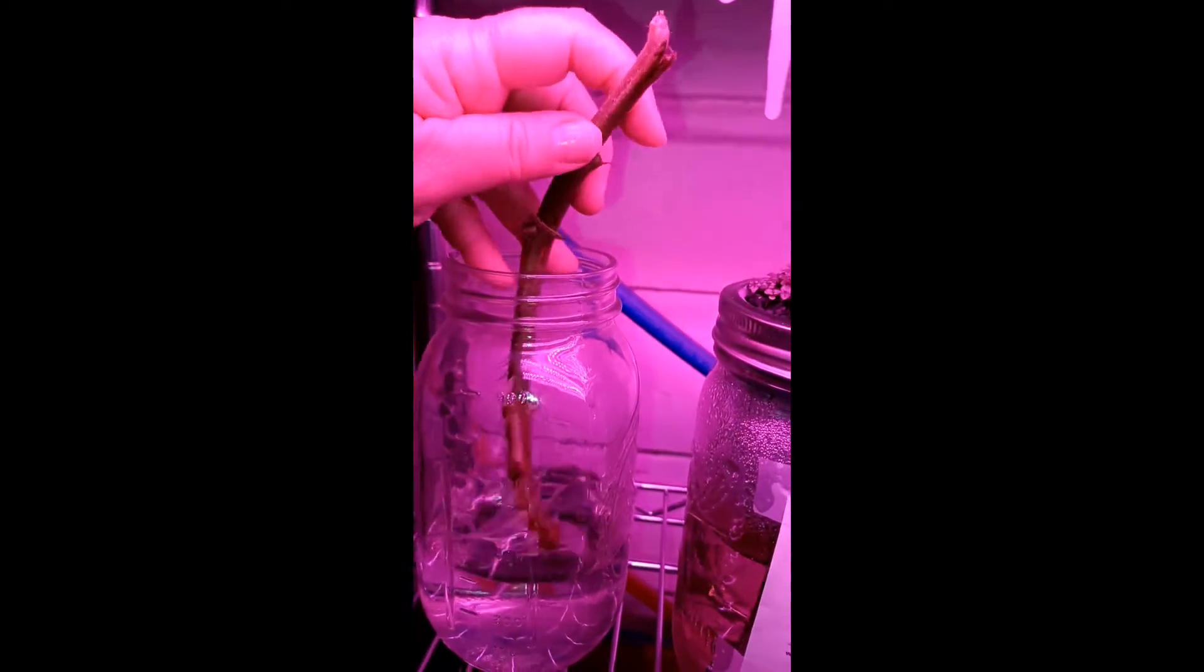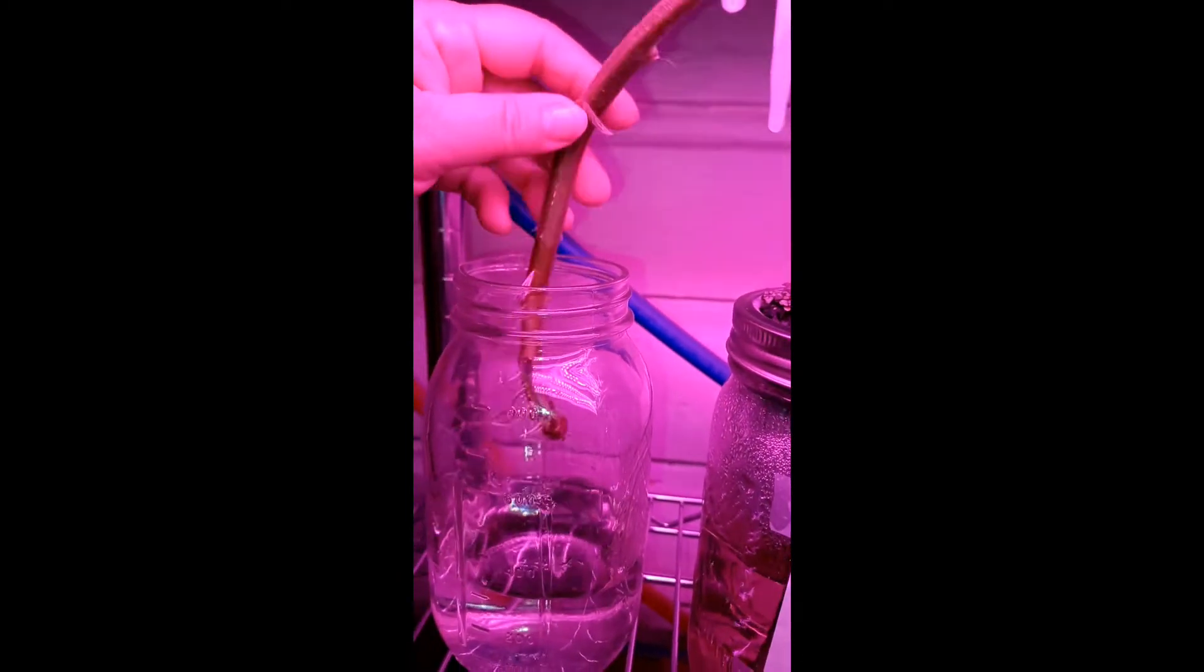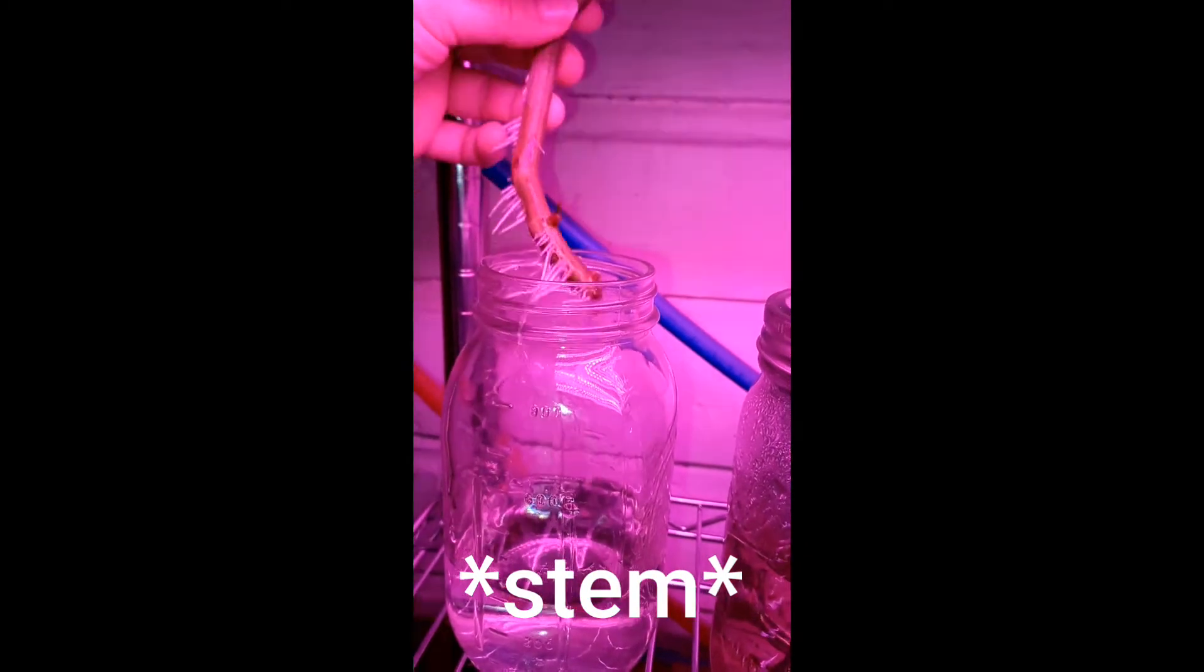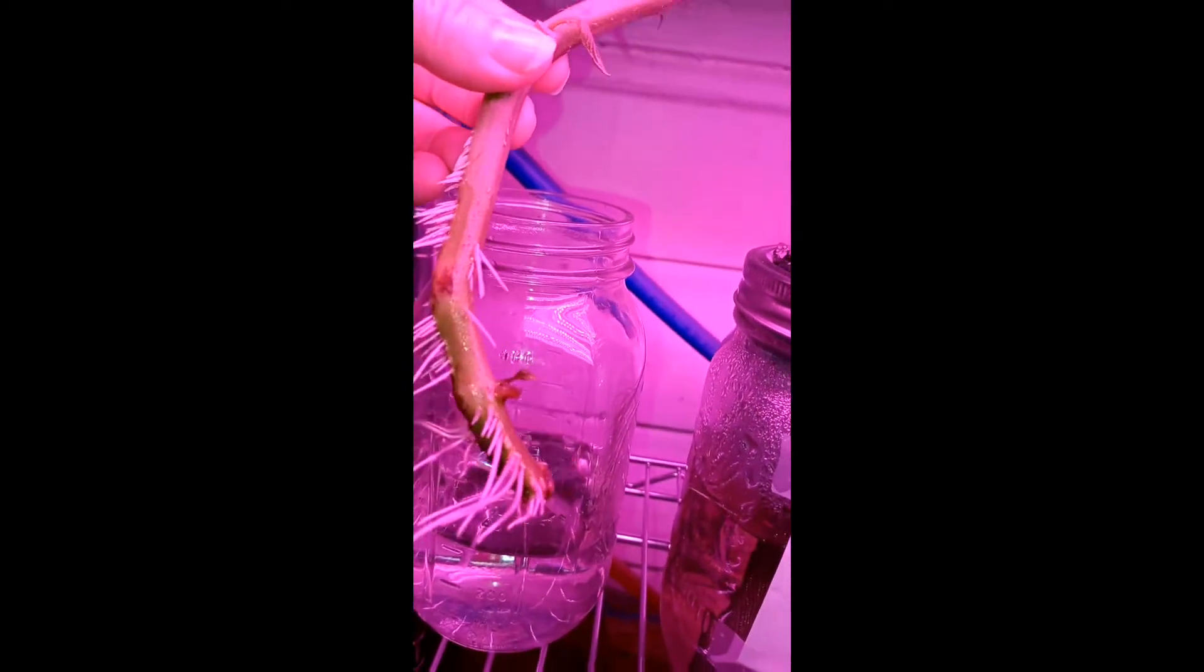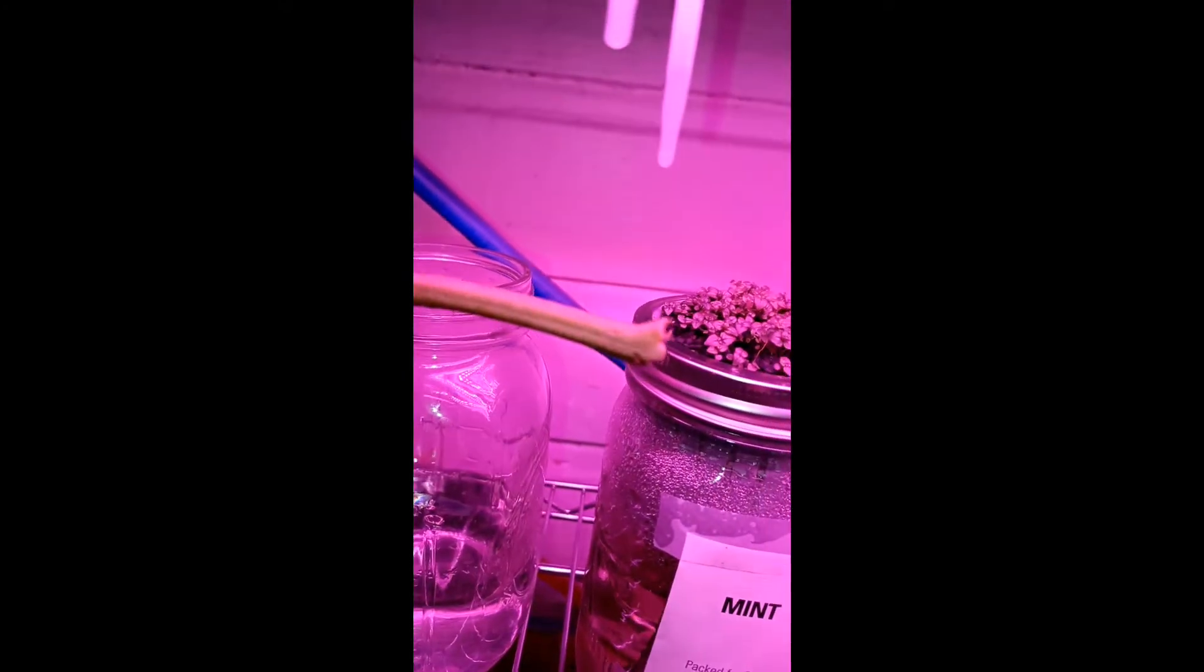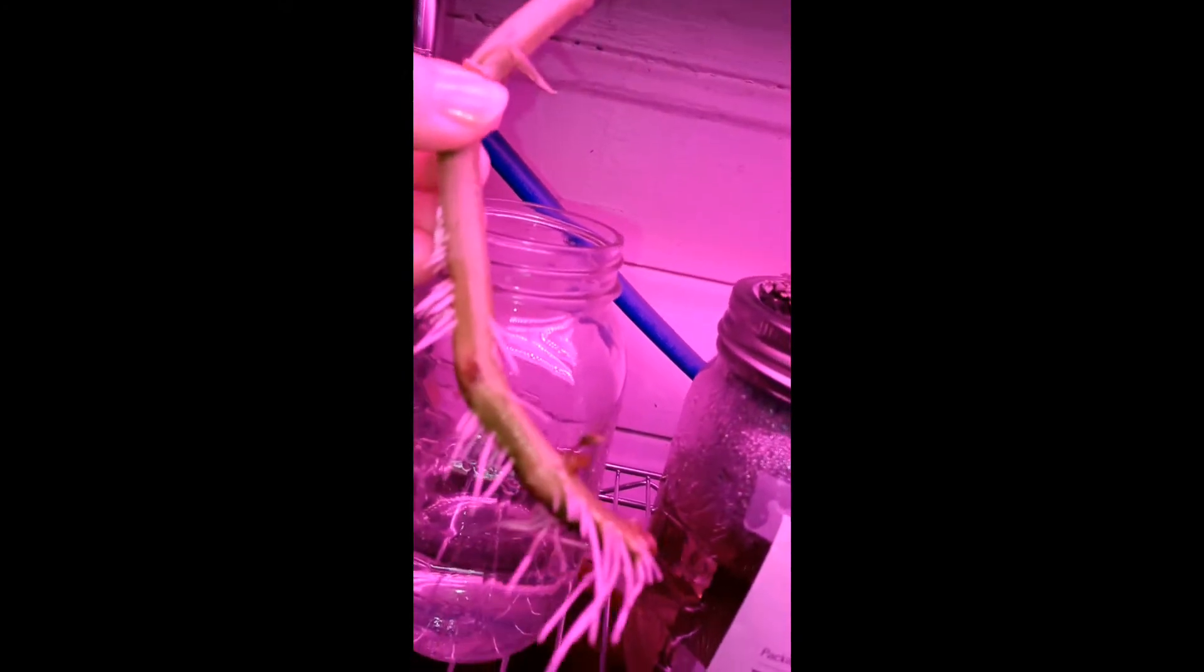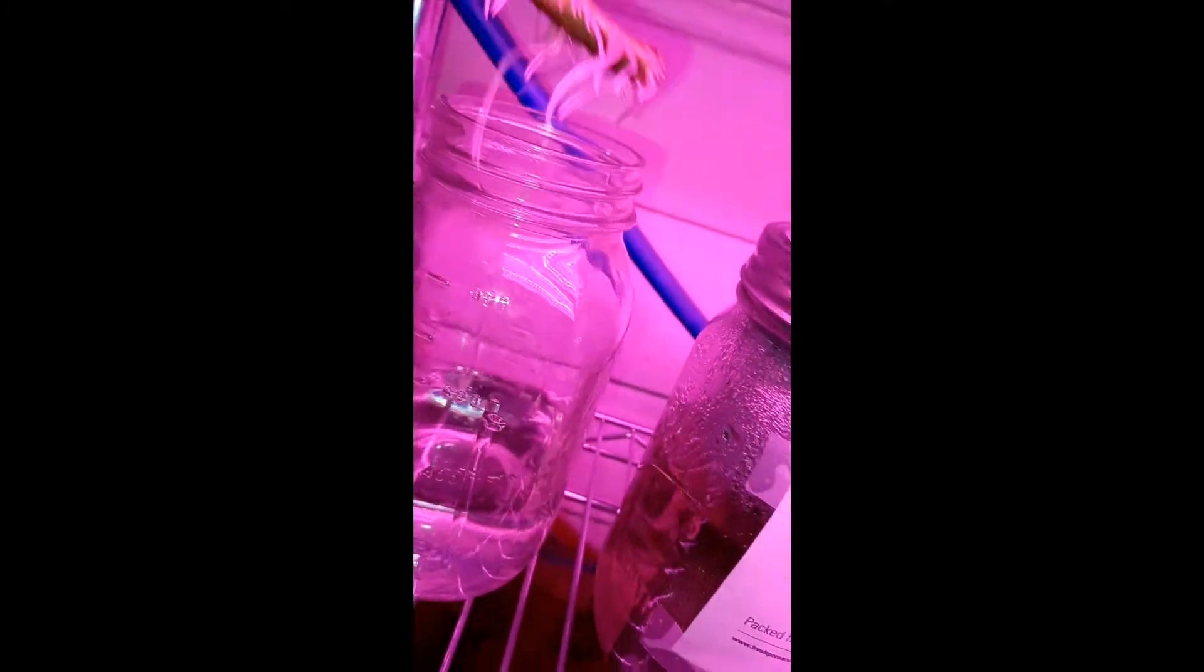This here is an arm that broke off of one of my tomato plants out back. I stuck it in the water, pulled all the leaves off. This is a new leaf here growing. And look, all those roots.